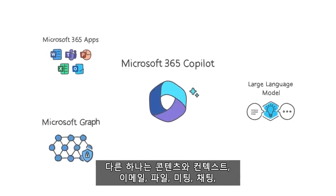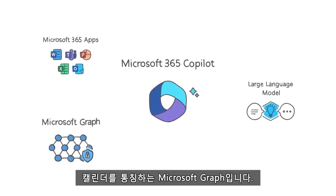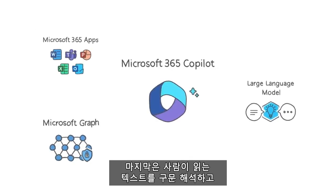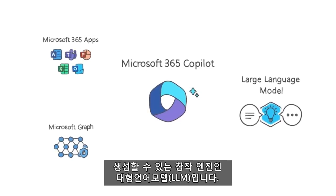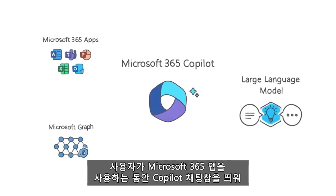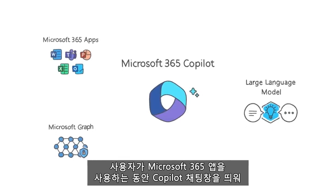The Microsoft Graph — that's all your content and context: your emails, files, meetings, chats, and calendar. And a large language model, or LLM, a creative engine capable of parsing and producing human-readable text, all accessible through natural language.